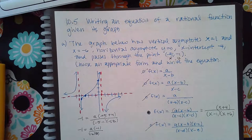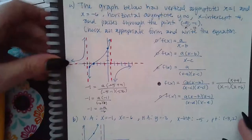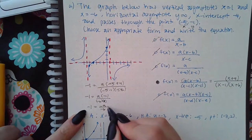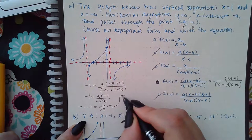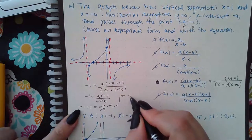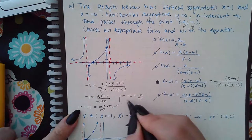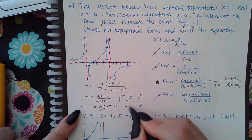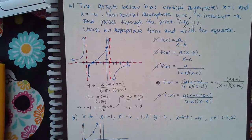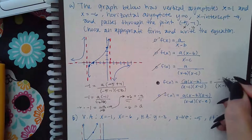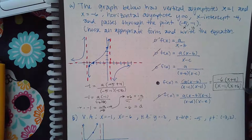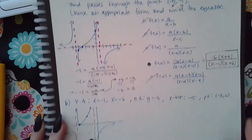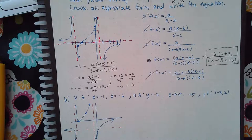That gives me negative one equals negative a over negative six. Multiplying both sides by negative six, I get positive six equals negative a. Dividing by negative one, I find a equals negative six. So the 'a' value is negative six, and that's the answer they're looking for. Now let's look at another version of this problem.